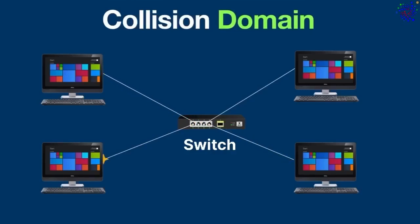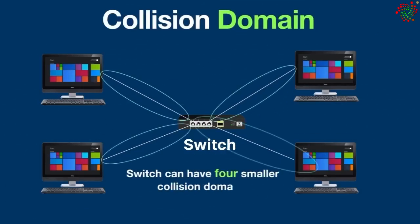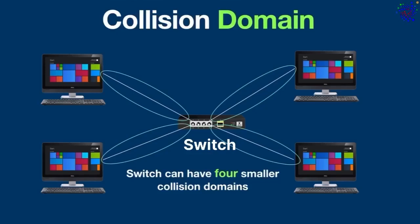Each port on the switch is in a separate collision domain. So instead of having one large collision domain like a hub, a switch can have multiple smaller collision domains. For example, if a switch has 16 ports, there will be 16 collision domains, which minimizes the chance of collisions. The good thing is switches are also full-duplex, which means they can send data in both directions at the same time.